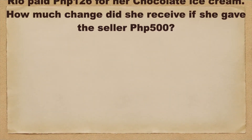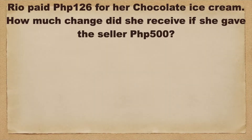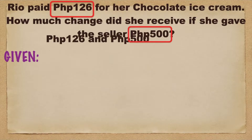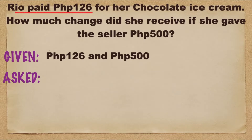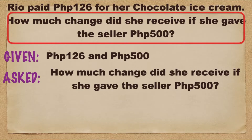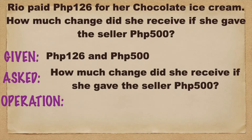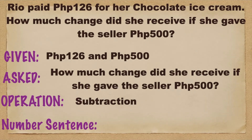Let's have the next problem. Rhea paid 126 pesos for her chocolate ice cream. How much change did she receive if she gave the seller 500 pesos? Let's find the given: we have 126 pesos and 500 pesos. What is the problem asking? How much change did she receive if she gave the seller 500 pesos? What operation are we going to use? We're going to use subtraction. Let's write the number sentence: 500 minus 126 is equal to n.